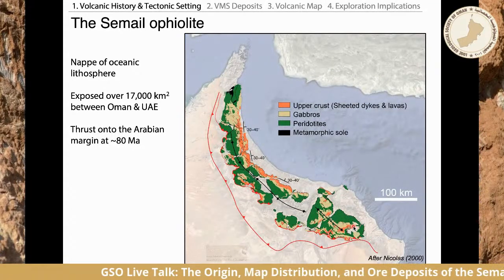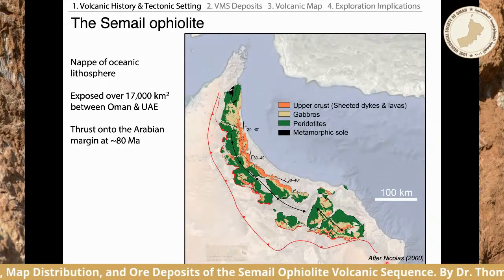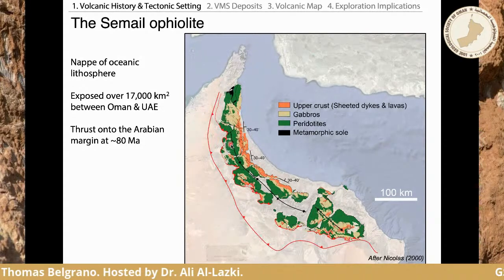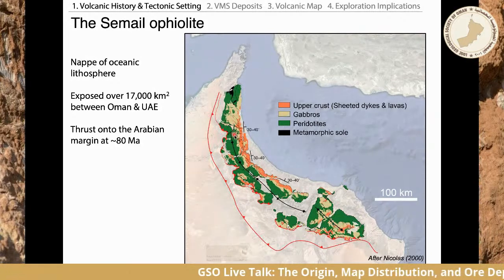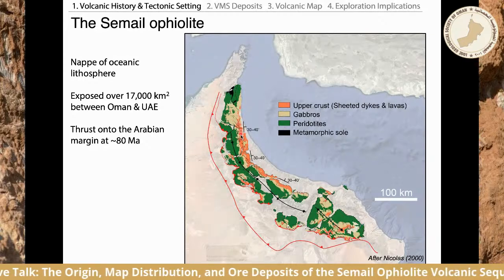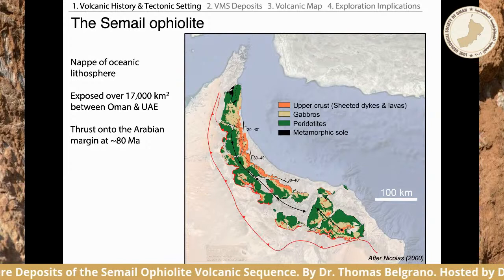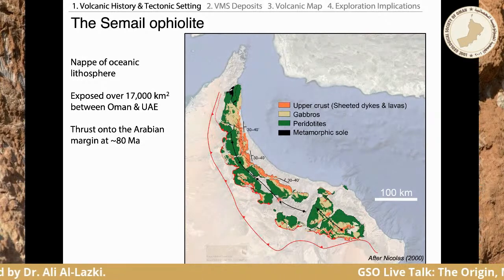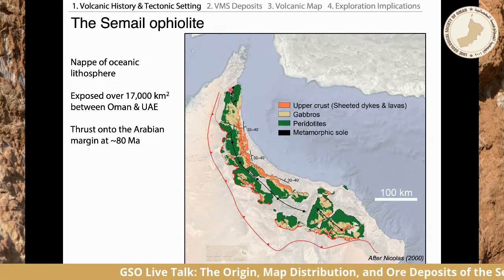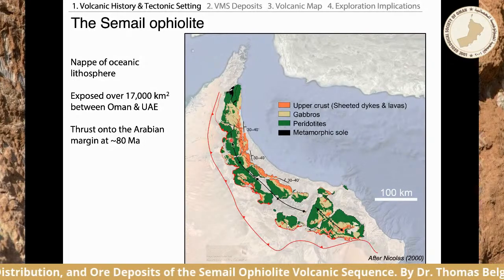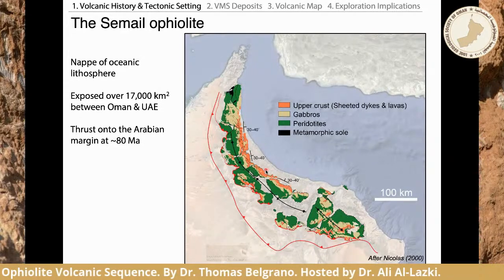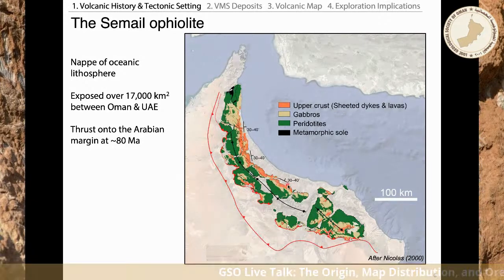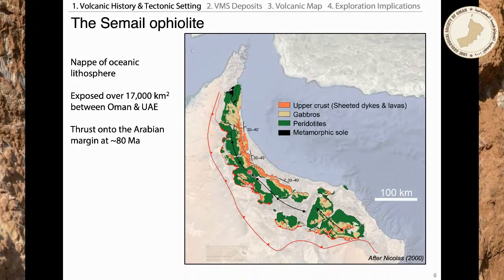Looking at a simplified map of its geology, taken from Nicolas's great 2000 paper, we can see the green unit — peridotite mantle rocks — the beige unit — Gabbro lower crustal section — and the orange unit — the upper crust of sheeted dikes and lavas. After it was thrust onto the Arabian margin at around 80 million years ago, it was warped into a broad anticline with its axis running down the spine of the Hajar Mountains, exposing a beautiful oblique cross-section through oceanic lithosphere along its trailing edge.